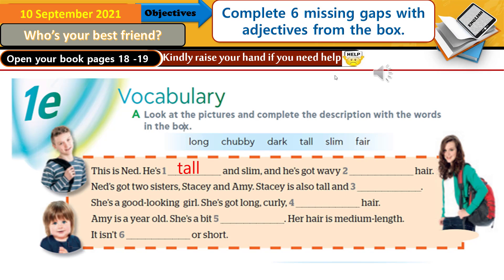Now let's read the words from the box together: long, chubby, dark, tall, slim, fair. Now listen again and complete — fill in the gap.